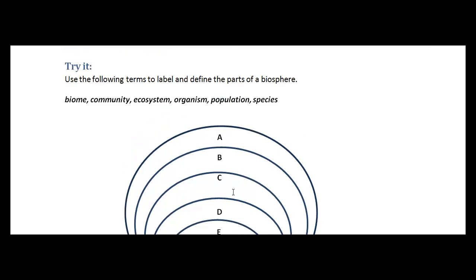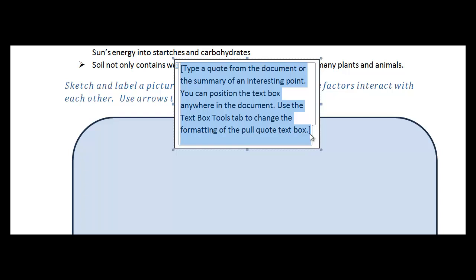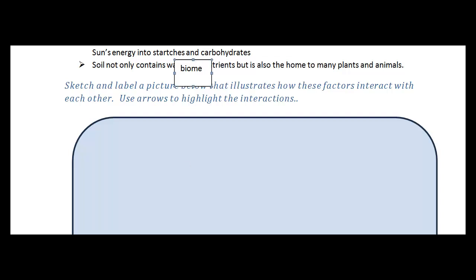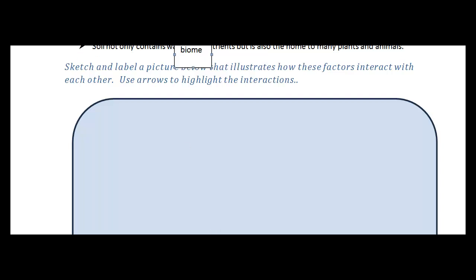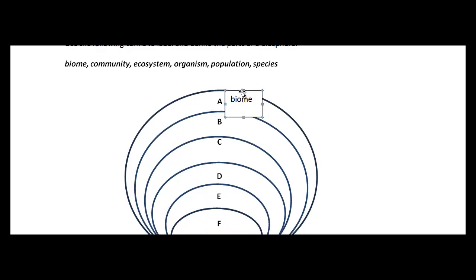So what I want you to do here is to label this diagram from smallest to biggest: biome, community, ecosystem, organism, population and species. And I'm going to do the first one with you. So the first one I'm going to identify is biome, which is the largest of this system. So for this diagram here, the biome would be represented by our largest area here or spot A. So there's our biome.